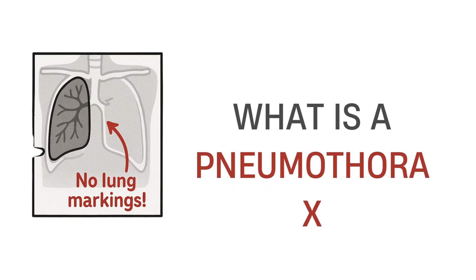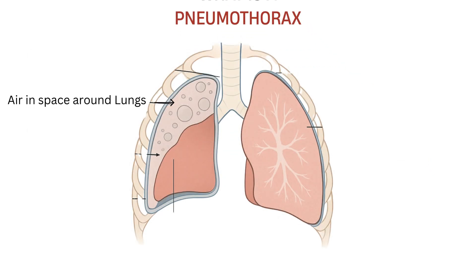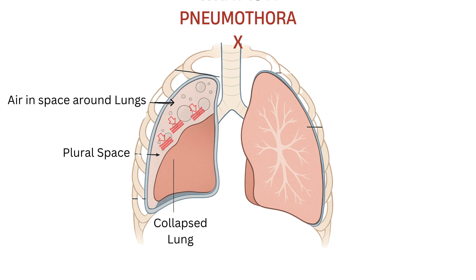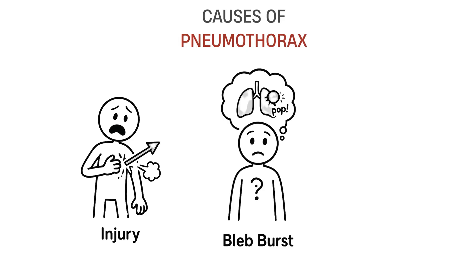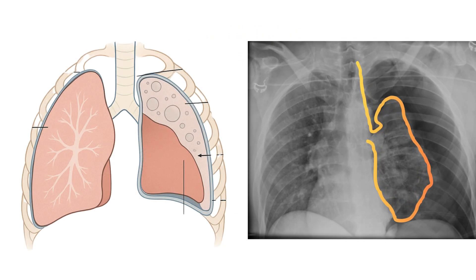So, what exactly is a pneumothorax? It's when air gets into the space around the lung where there's normally no air at all. That space is called the pleural space, and when air enters it, it puts pressure on the lung and makes it collapse either a little or a lot. This can happen because of an injury, a burst lung bubble called a bleb, or even just after inserting a central line. Sometimes it even happens out of nowhere, especially in tall, skinny people. Once you understand what's happening inside the chest, the changes you see on the x-ray make total sense.